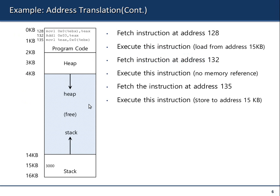The program will be coming from the disk and will be loaded into memory by the operating system. This will be the layout of the process — the address space for the process. The operating system will create and instantiate a data structure called the process control block to describe the process. Within that process control block, there is a pointer to the address space of the process. You can think of the address space as a field in the process control block. When the operating system schedules this process to run on the CPU and it is selected, it will begin execution.